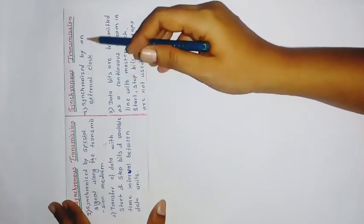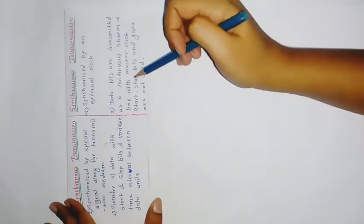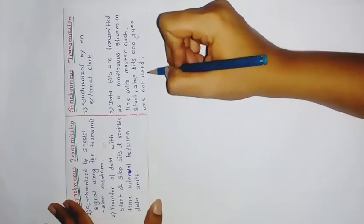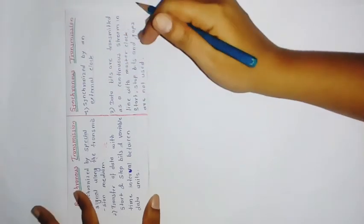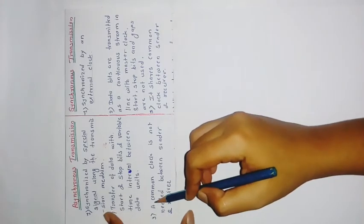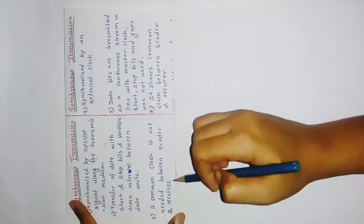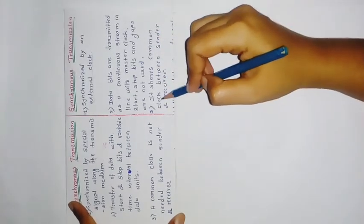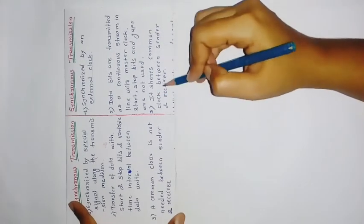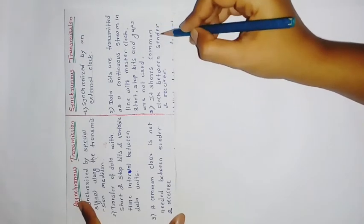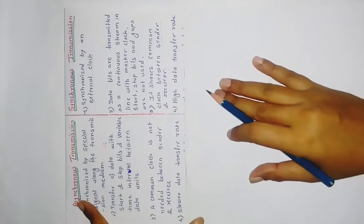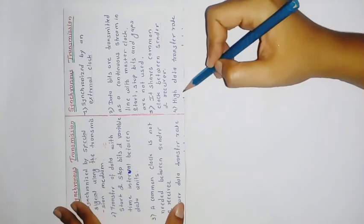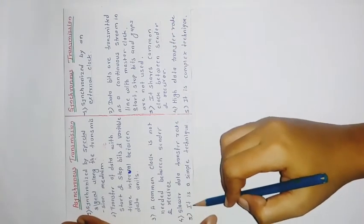In synchronous transmission, data bits are transmitted as a continuous stream in line with a master clock, meaning data is sent continuously. Start bits, stop bits, and gaps are not used in synchronous transmission. Also, in asynchronous, a common clock is not needed between sender and receiver, whereas in synchronous, the transmitter and receiver share a common clock.